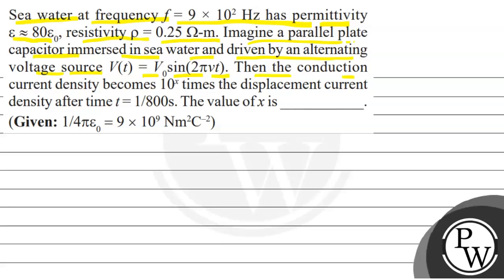Then the conduction current density becomes 10 to the power x times the displacement current density after time t equals 1 upon 800 second. The value of x is, given that 1 upon 4 pi epsilon naught equals 9 into 10 to the power 9 Newton meter square per coulomb square.